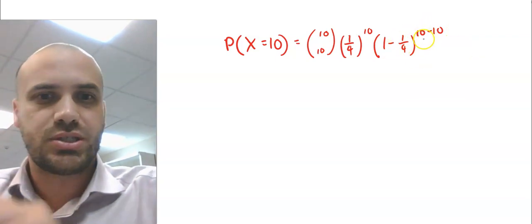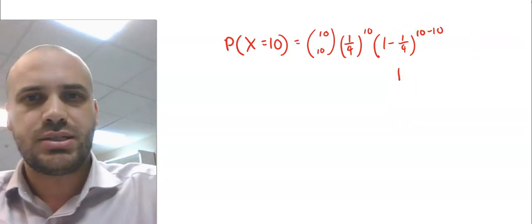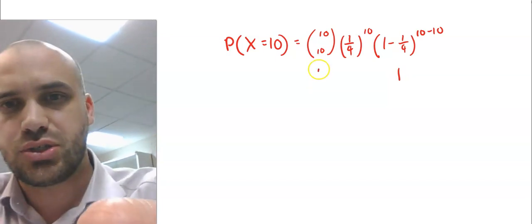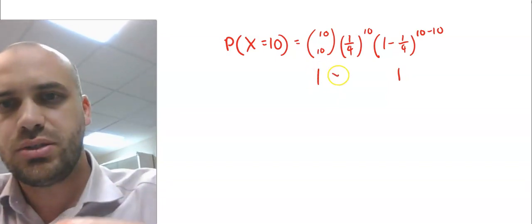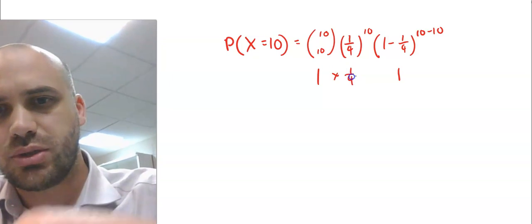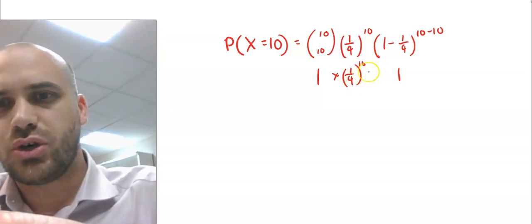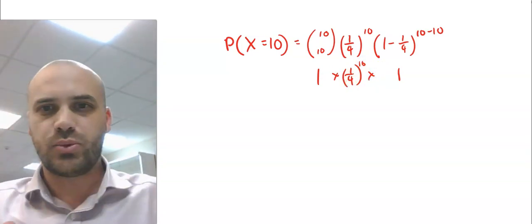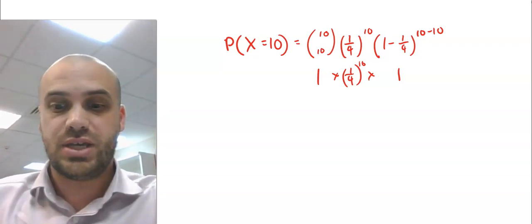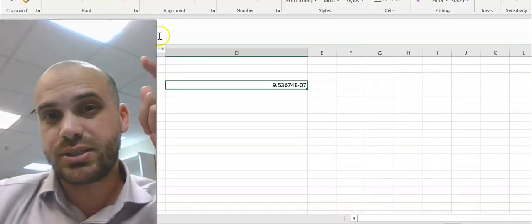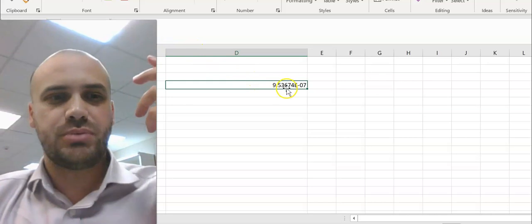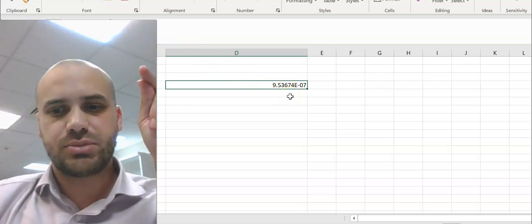Now, 1 minus 1 quarter to the 0 is just 1. 10 choose 10 is just 1. So, it's 1 times 1 quarter to the power of 10 times 1. In other words, it's just going to be 1 quarter to the power of 10. When I type that formula into Excel, I get 9.53 times 10 to the negative 7. That's a small number.